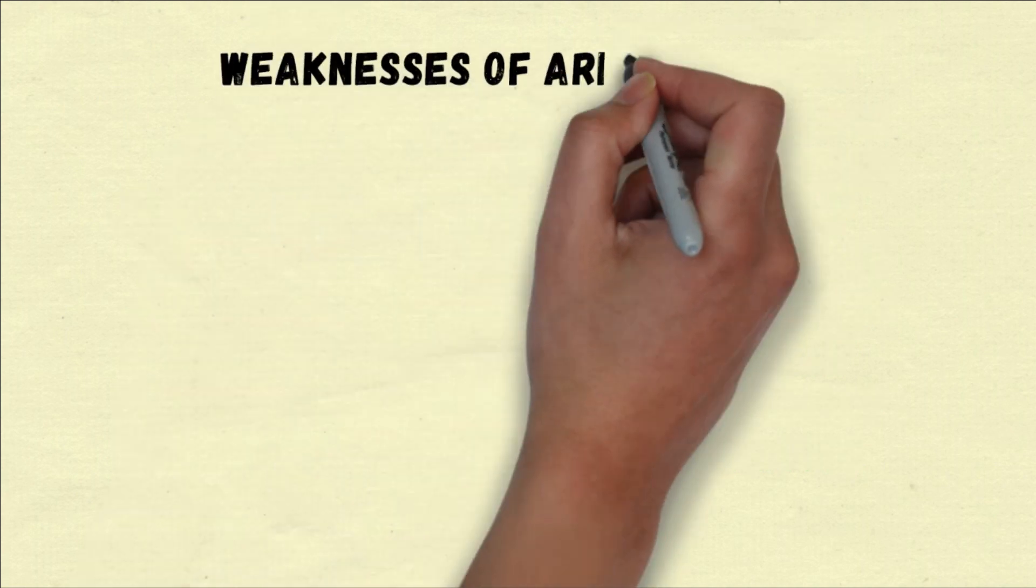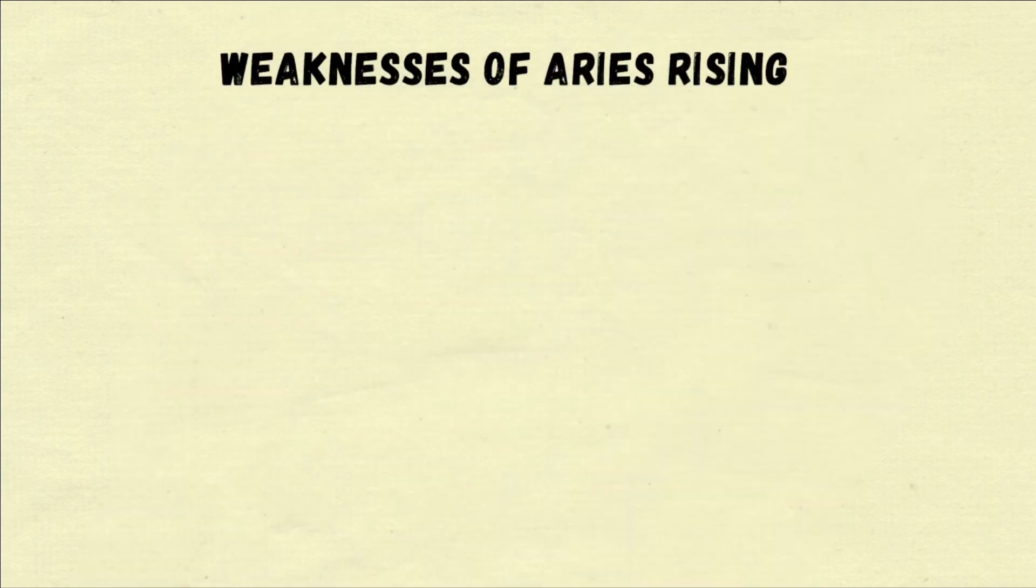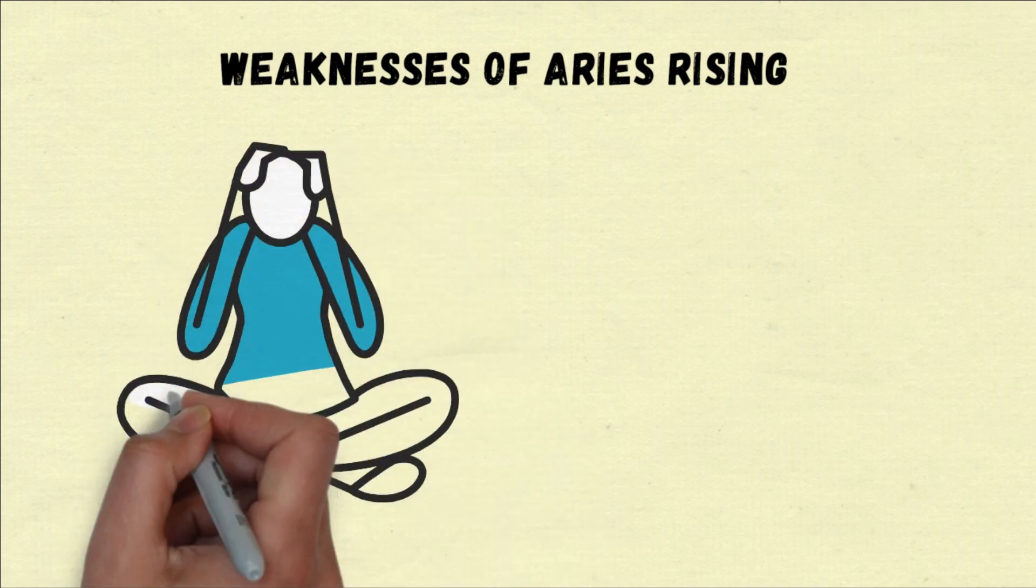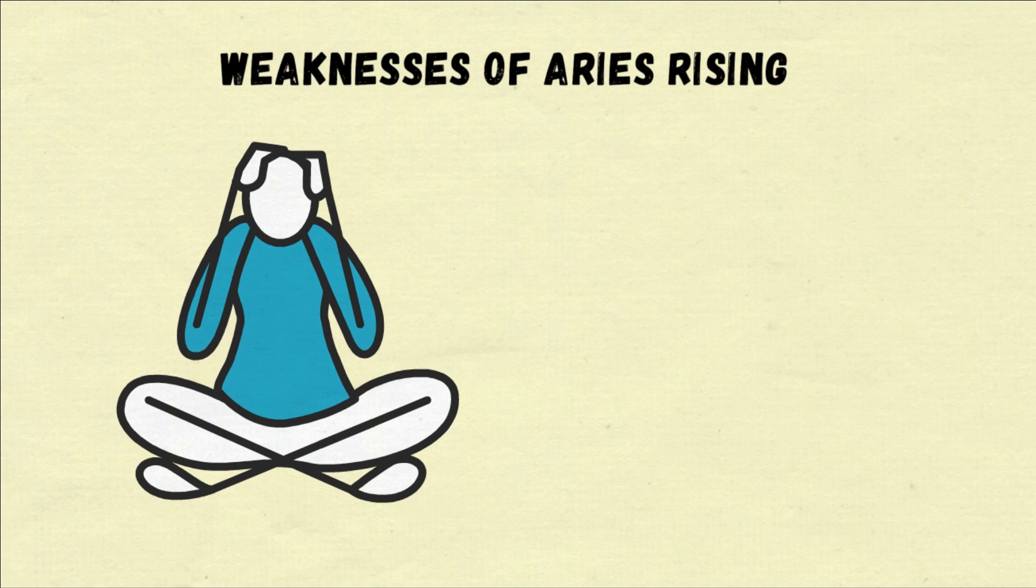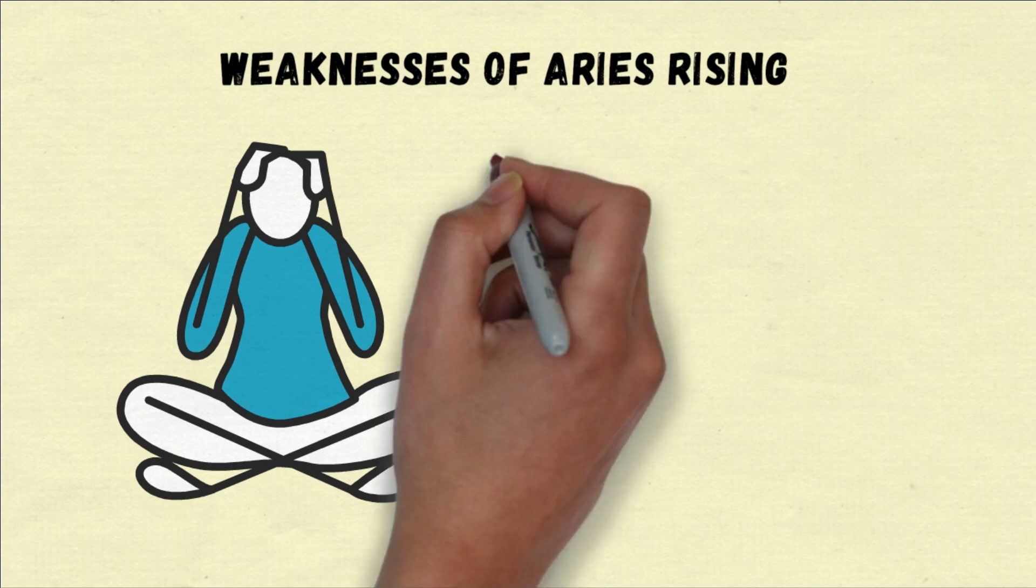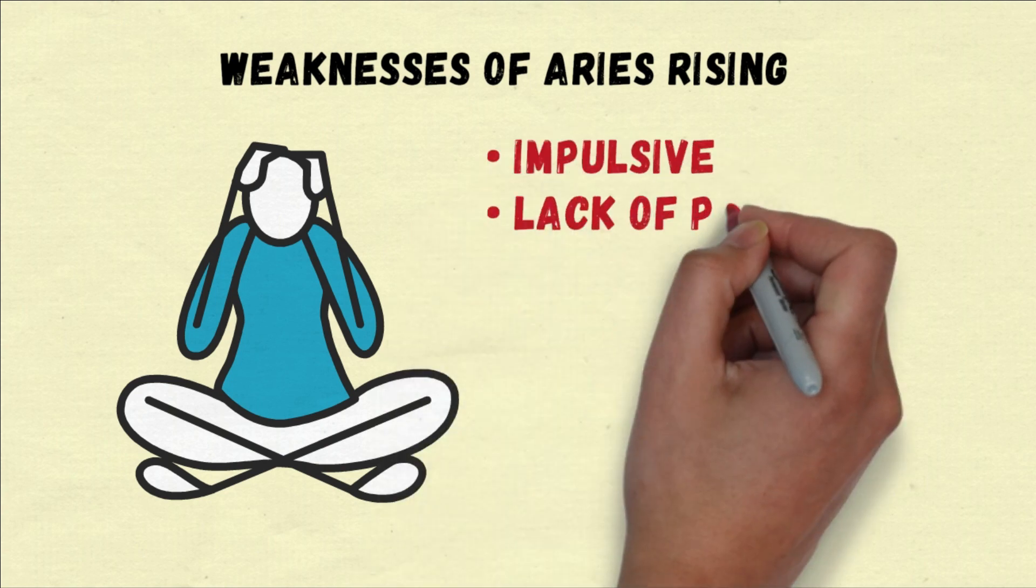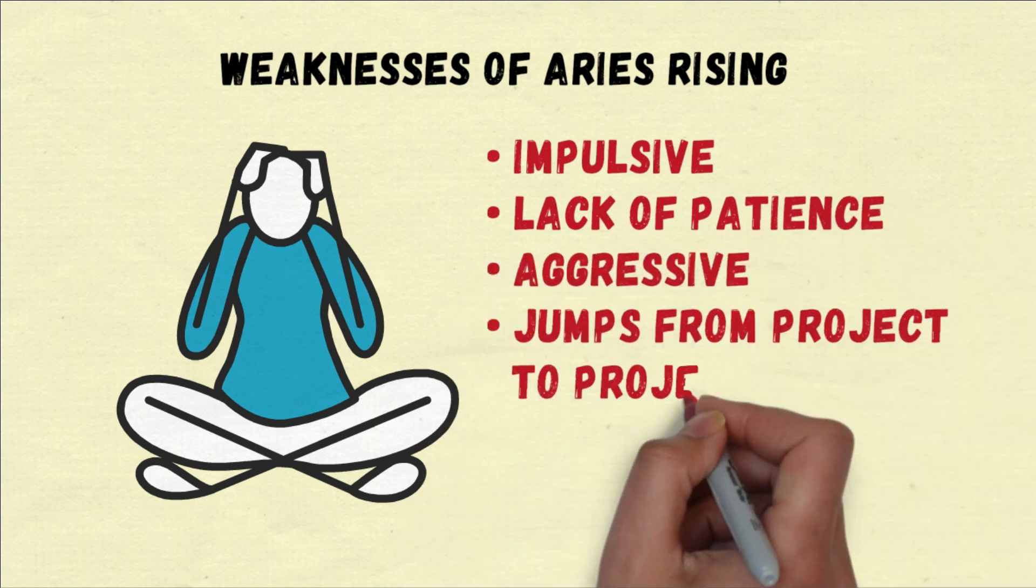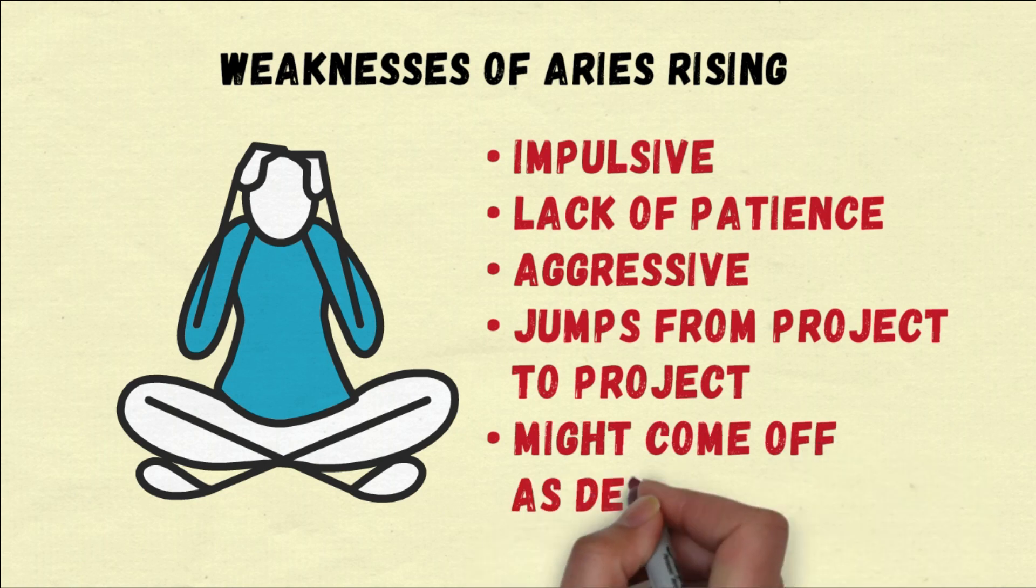Weaknesses of Aries Rising. With all of these strengths, there are also bound to be a couple of weaknesses. For the Aries Rising, here are some of the possible weaknesses they deal with. Impulsive, lack of patience, aggressive, jumps from project to project, might come off as demanding.